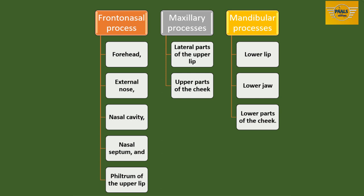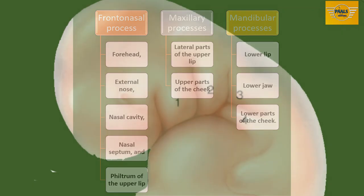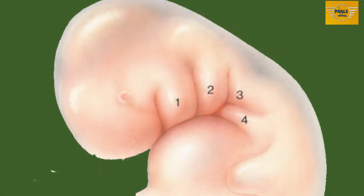From the maxillary process, we will have the lateral parts of the upper lip and the upper parts of the cheek. For the mandibular process, we will see the lower lip, the lower jaw, and the lower parts of the cheek. This is the embryo at the beginning of the fourth week of development.